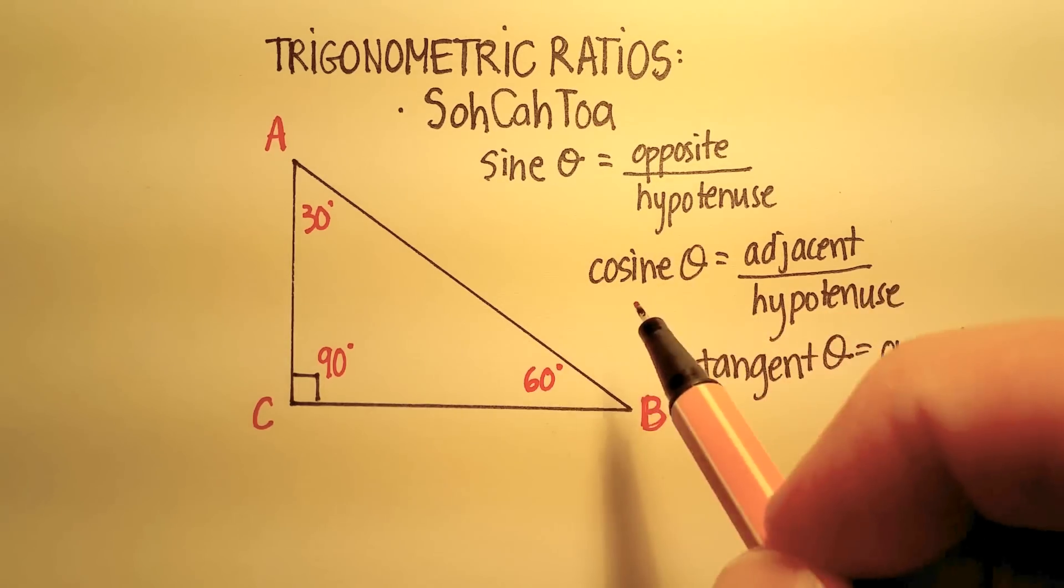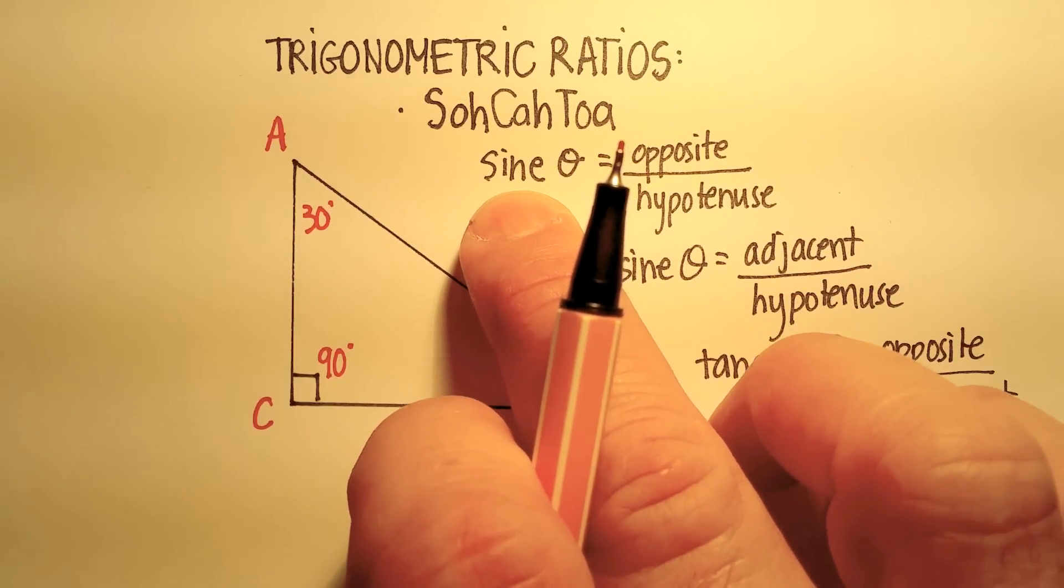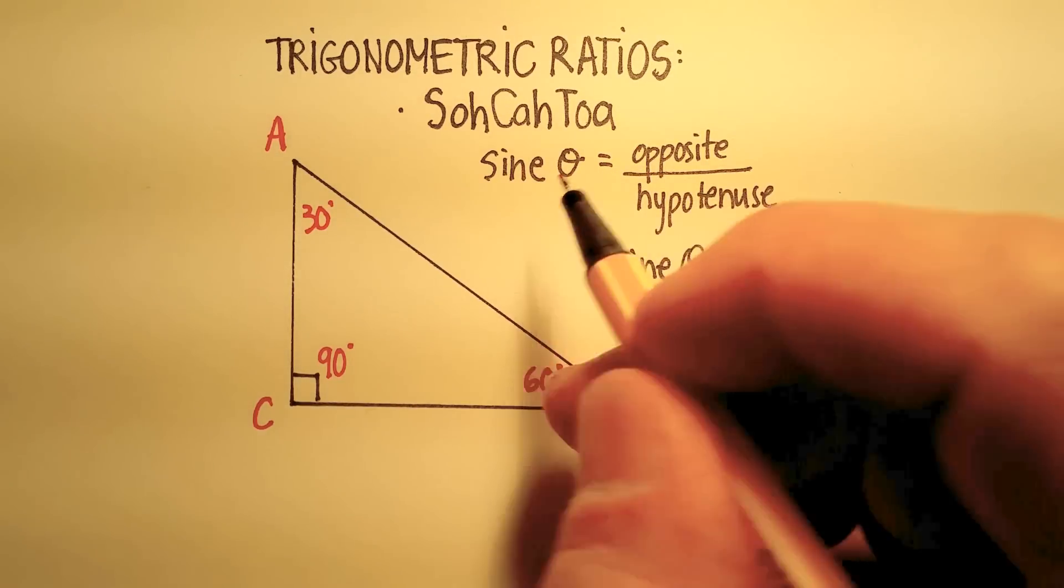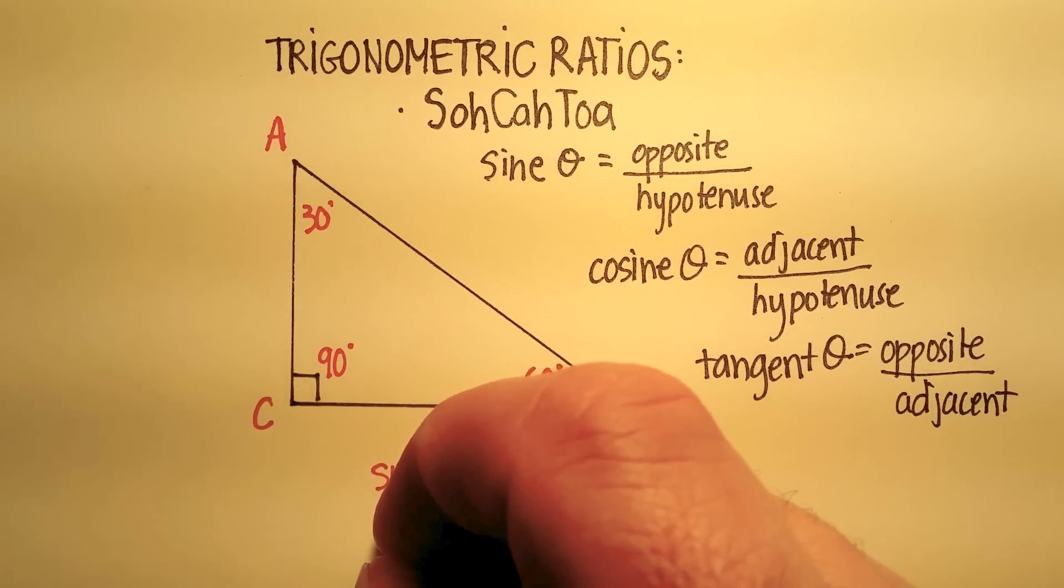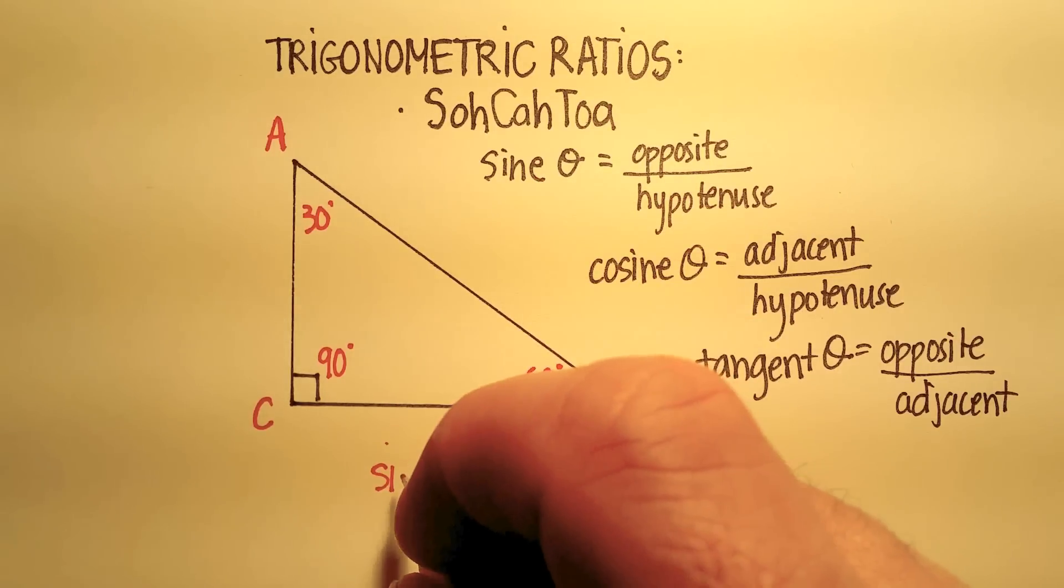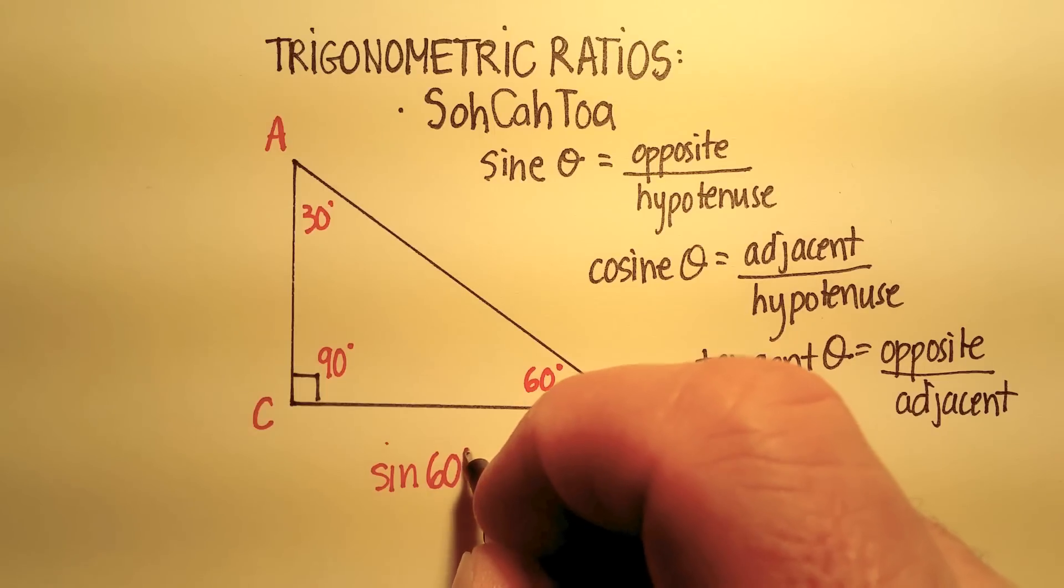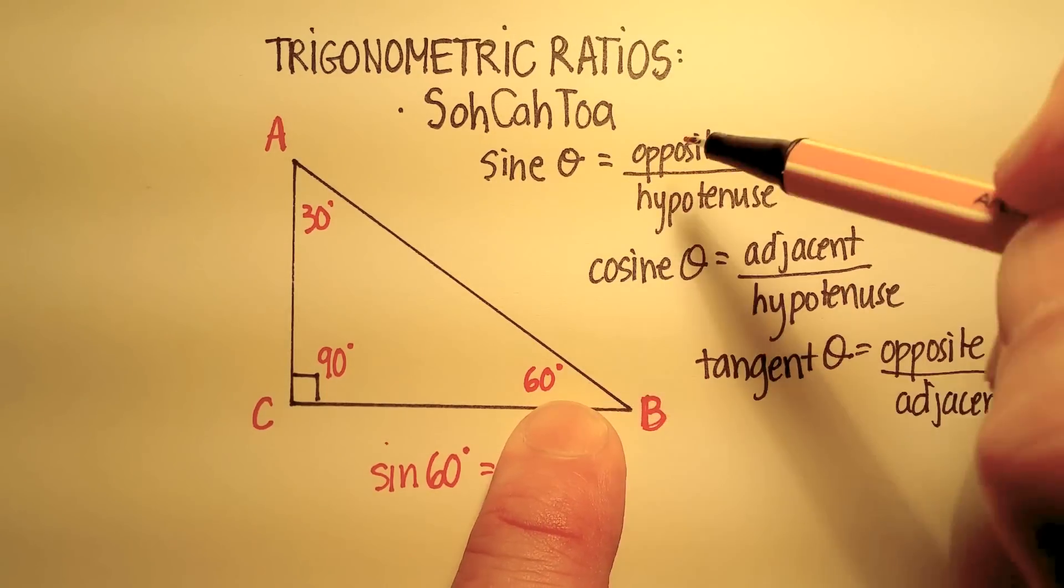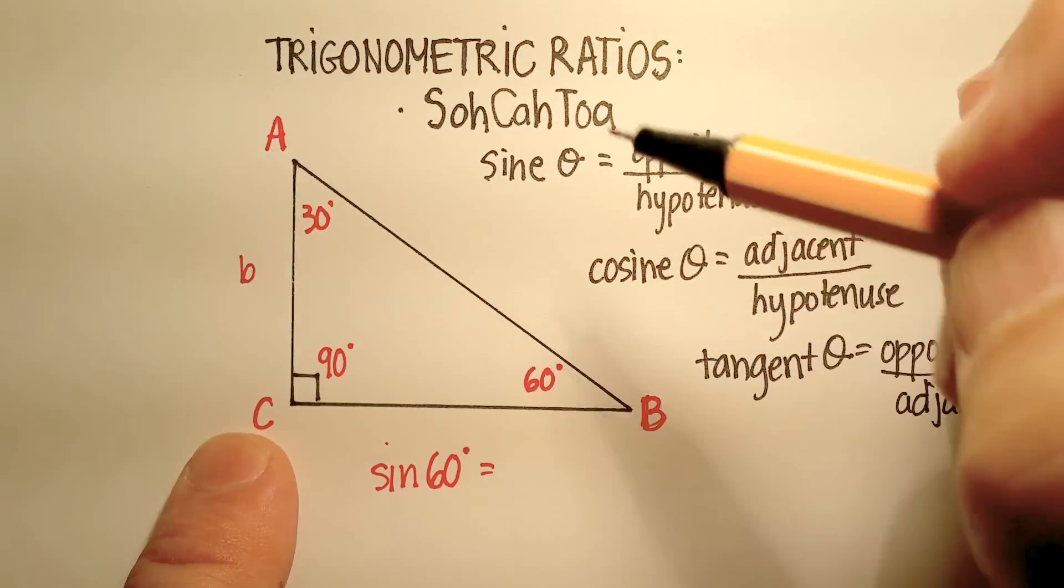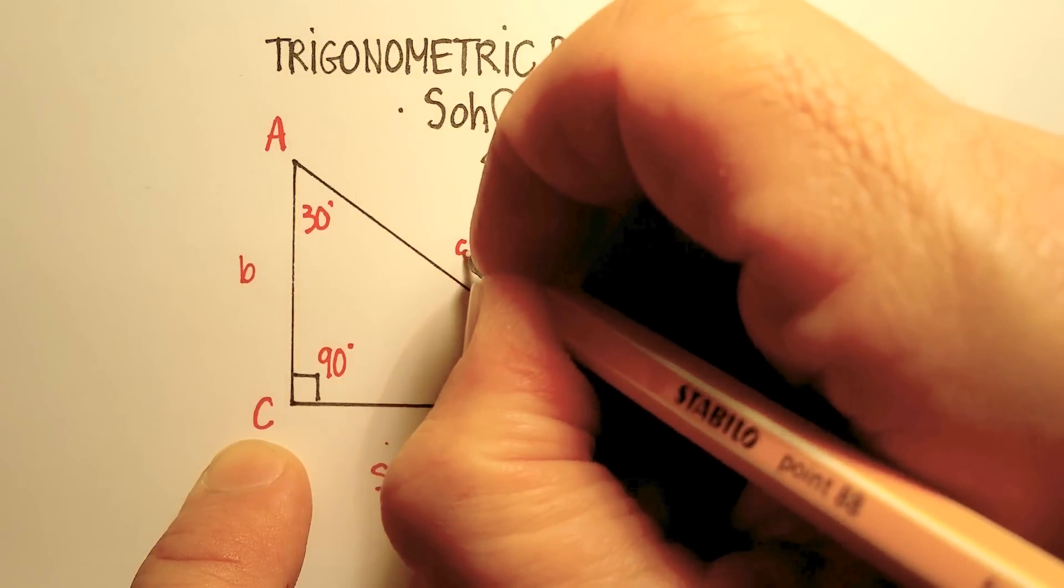So according to this, we can figure out these sides simply by saying the sine of 60 degrees. So we'll say the sine of 60 degrees will be equal to, in this case, the opposite side, so we'll call this little b, over the hypotenuse side, which we'll call this one little c.